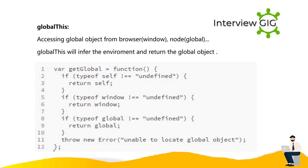GlobalThis: Accessing the global object differs by environment — in a browser it is window, in Node.js it is global. globalThis will infer the environment and return the global object. Example: var getGlobal = function() { if (typeof self !== 'undefined') return self; if (typeof window !== 'undefined') return window; if (typeof global !== 'undefined') return global; throw new Error('Unable to locate global object'); };